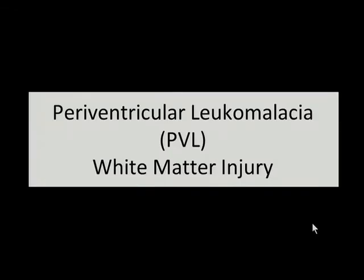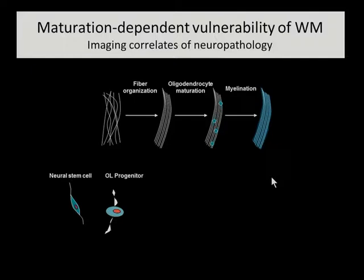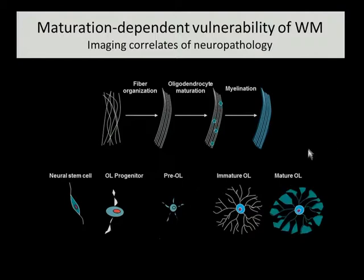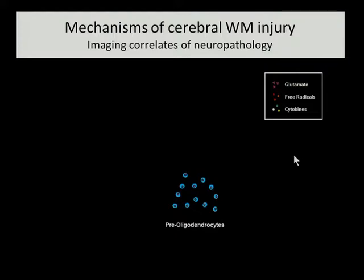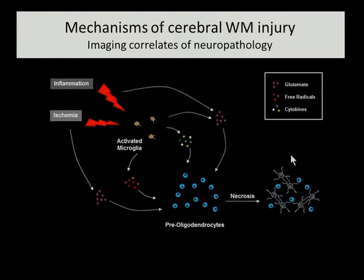The major lesion we've spent considerable time on with MRI is white matter injury. The immature white matter starts with very disorganized fiber organization prior to maturation of oligodendrocytes and myelination. Within each area there are cell stages from the neural stem cell to the oligoprogenitor, the pre-oligodendrocyte, and the immature oligodendrocyte putting out its processes before it starts to myelinate. In the immature brain it is the pre-oligodendrocyte that is very sensitive to injury. Multiple pathways — particularly ischemia and inflammation — activate microglia to produce free radicals, cytokines, and glutamate, which lead to pre-oligodendrocyte death.